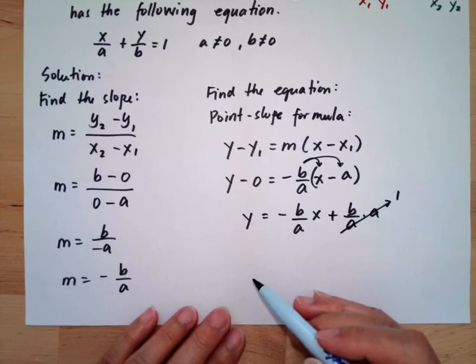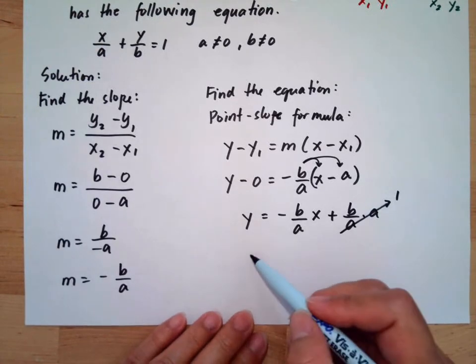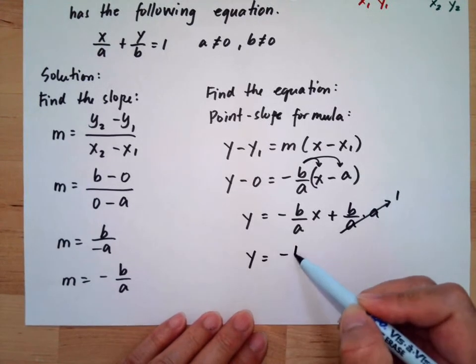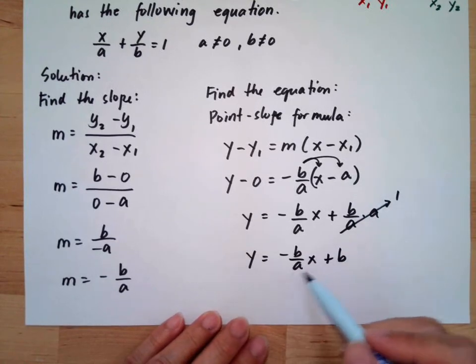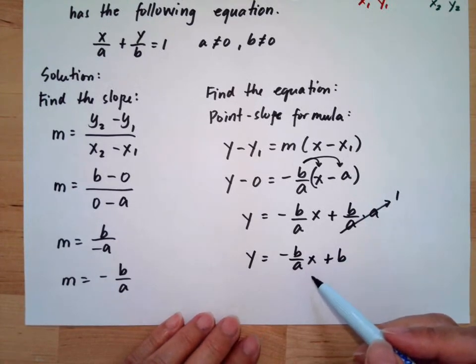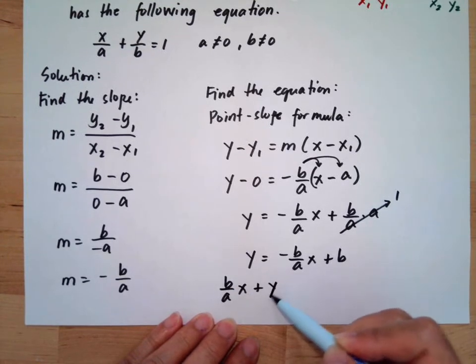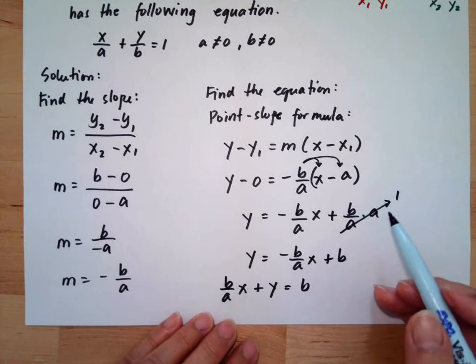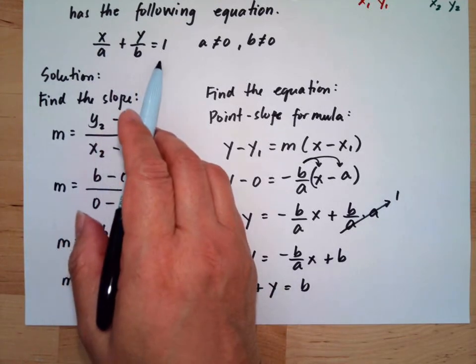So this equals -b/a times x plus b. Adding b/a times x to both sides, we have b/a times x plus y equals b. Now we want this to be equal to 1 based on our given equation.